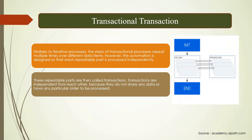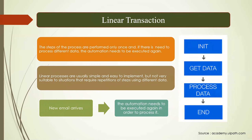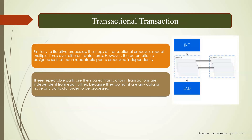In the transactional process, similar to iterative, it starts but instead of getting all data at once, it gets the data one by one. It won't read all emails at once; instead it takes one email, processes it, then gets email two, processes it, and so on. This reduces dependencies between transactions. If email number five fails, it has no impact on six, seven, or eight. That is the key difference between iterative and transactional.